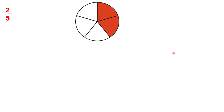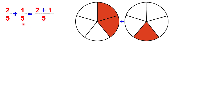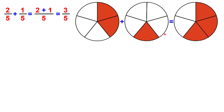Let's see another example. 2 over 5, or 2 fifths — you can see it here as well. Plus 1 over 5, 1 fifth. So you have the same denominator, so the result will have the same denominator, which is 5. And you just sum the numerators: 2 plus 1 is 3. So you get 3 over 5, and you can see it here as well on the right-hand side.